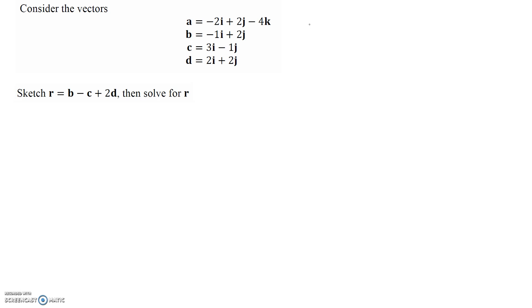Let's start with vector b. It's negative 1i plus 2j, which means it has a negative x component and a positive y component, so it's going to look something like this. That's my vector b.